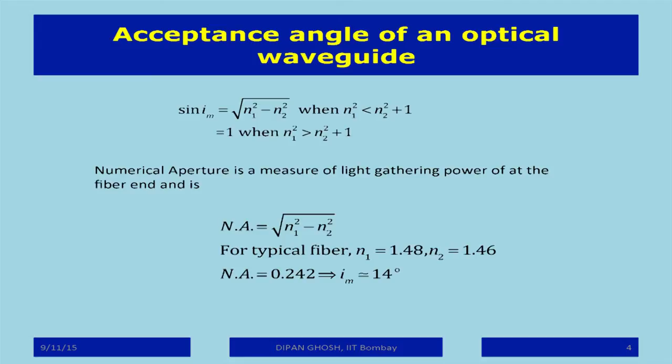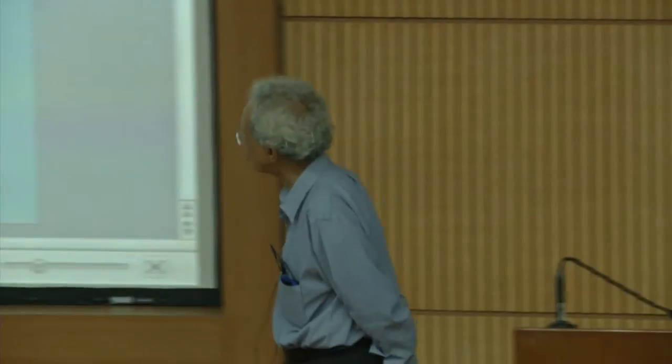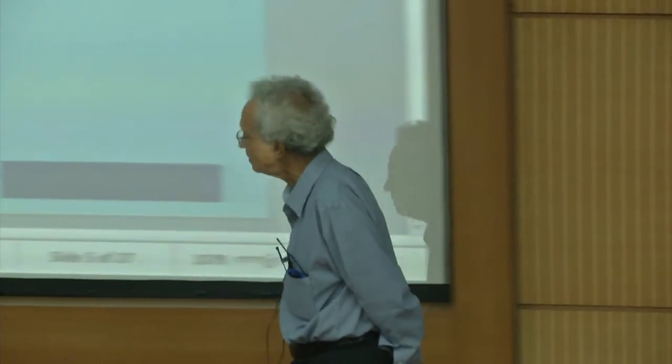Numerical aperture is a name given to what stands for the light-gathering power of the fiber. It tells you the beam angle at which the source beam must strike the interface so that guiding action takes place. I had worked out that i_m is about 14 degrees. I will also, for continuity, go through the linear superposition topic again slightly.